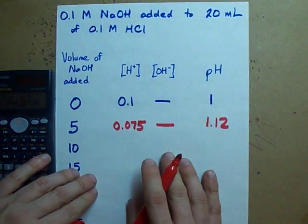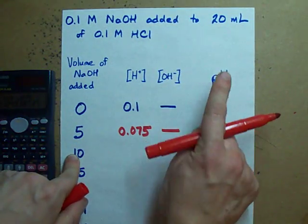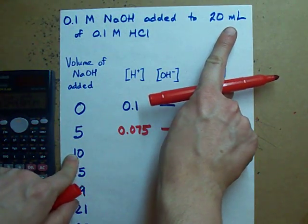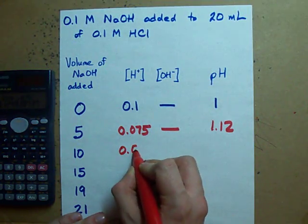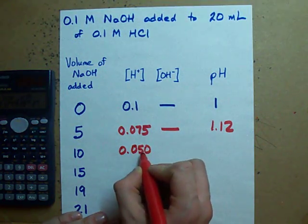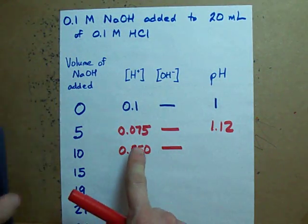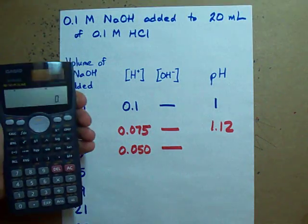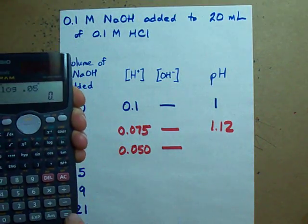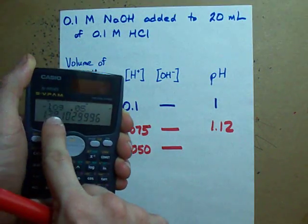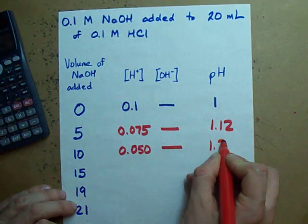What happens if I add double that amount of base? I'm titrating away half of my acid. Well, let's say I have half of the H+ left over. There's still no OH- because my H+ is still really high. My pH is negative log 0.05. My pH has gone up to 1.3. Rising.